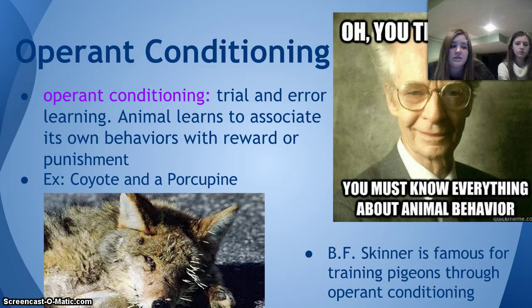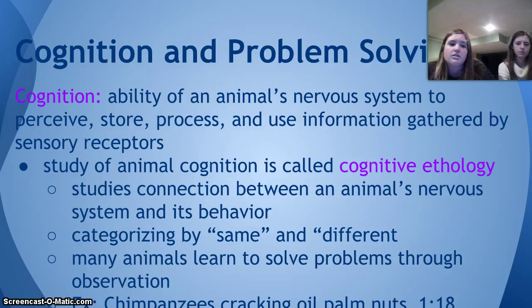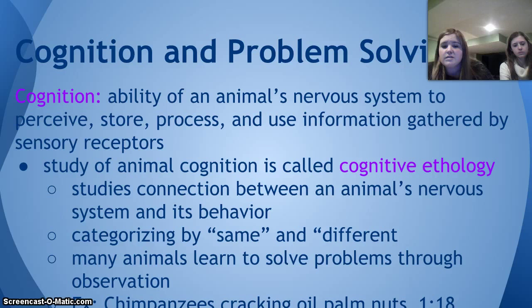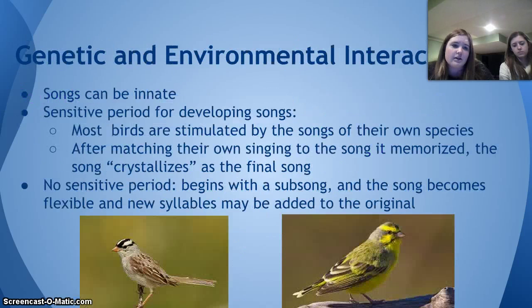Cognition and problem solving: cognition is the ability of an animal's nervous system to perceive, store, process, and use information gathered by sensory receptors. The study of animal cognition is called cognitive ethology, which studies the connection between the animal's nervous system and its behavior. It categorizes by same and different, and many animals learn to solve problems through observation. For example, if a chimpanzee is trying to learn how to crack oil palm nuts, it will look to its older companions to learn.